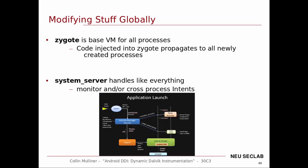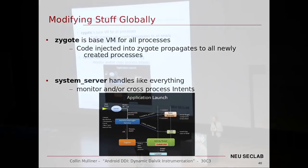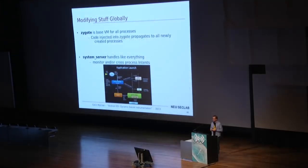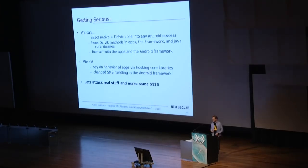One thing you can do is disable signature checking on the device globally. You just inject our verifier that always returns 1 into Zygote, and basically signature verification is gone everywhere in the whole system until you reboot. There are many other applications where you want to do global instrumentation.